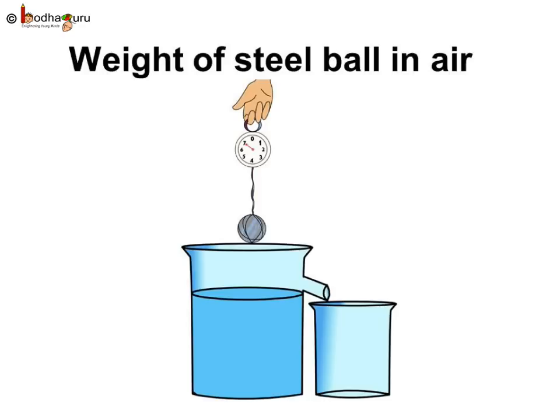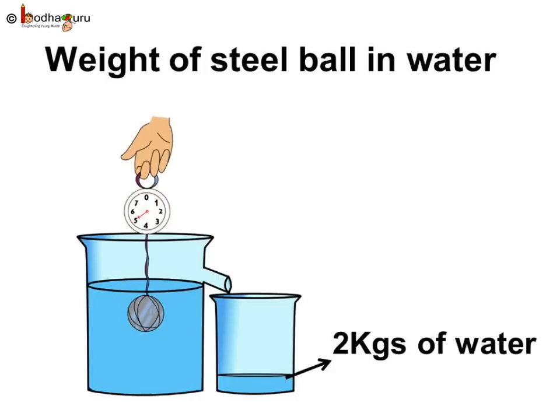Now let us find it mathematically. Let's assume the weight of the steel ball in air is 7 kg. Now immerse the steel ball in water — its weight is shown as 5 kg, which is lesser. This is because the buoyant force of water acts upon the steel ball. The weight of the steel ball in air is its actual weight, that is 7 kg. The weight of the steel ball inside water is its apparent weight, that is 5 kg.